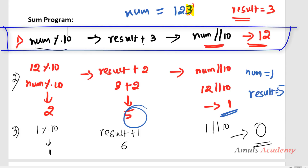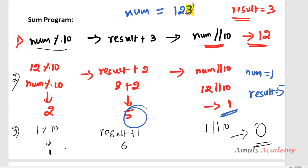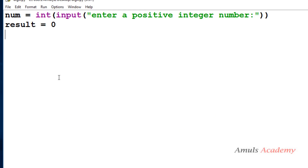Since we are executing the same code repeatedly for different values, we will use a loop. I will go for the while loop because we have a stopping condition: when num becomes 0, stop. The while condition will be: while num > 0. Inside the loop, I take a variable called digit and do digit = num % 10 to get each digit.